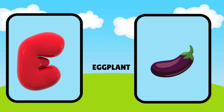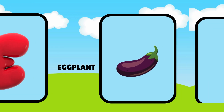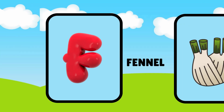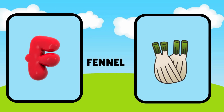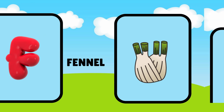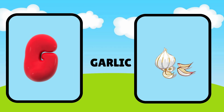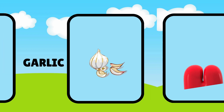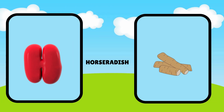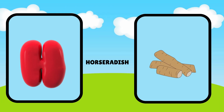E is for eggplant, eggplant. F is for fennel, fuh, fennel. G is for garlic, guh, garlic. H is for horseradish, ha, horseradish.